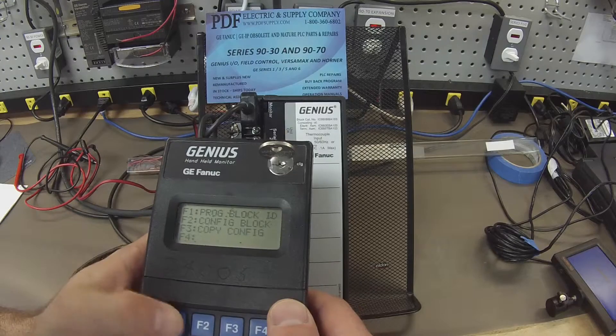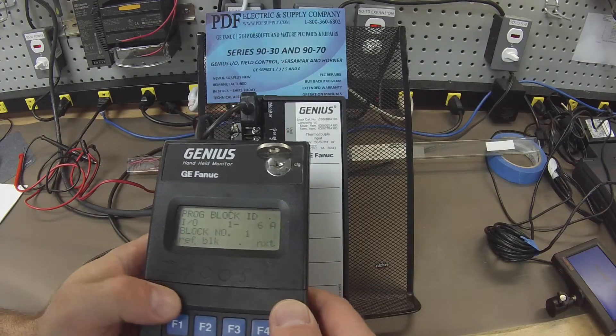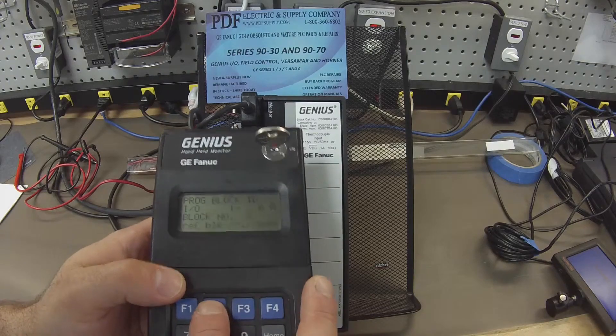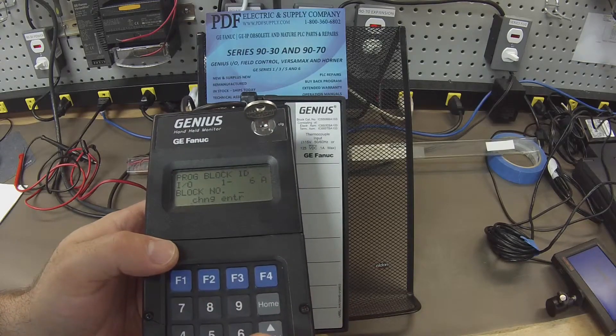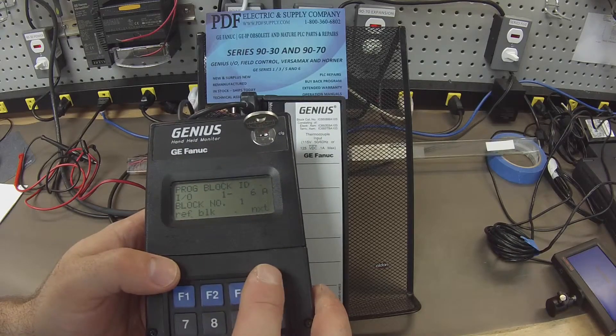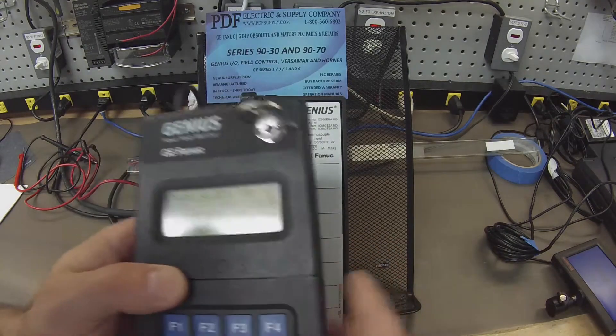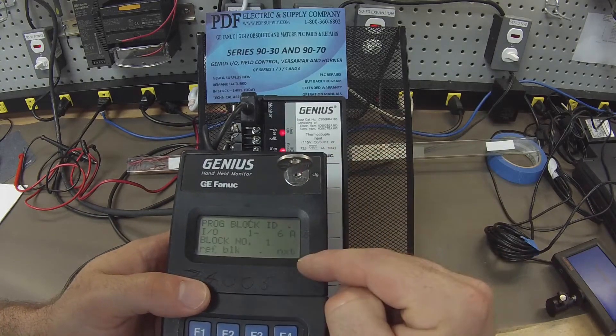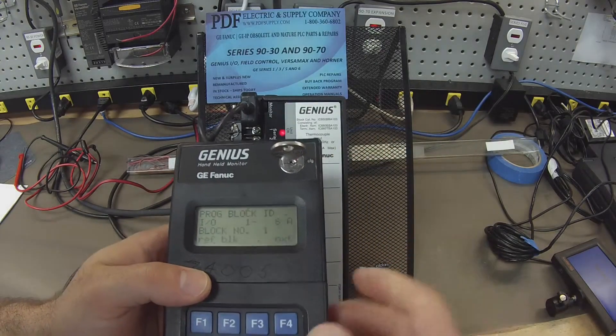Now F3 configuration, F1 program block ID. What I would normally do—I've already done F2, which is to change the block number to 1 and enter. And again, that's how I was able to get this light on, because this information that I've programmed through the handheld monitor matches Proficy Machine Edition.